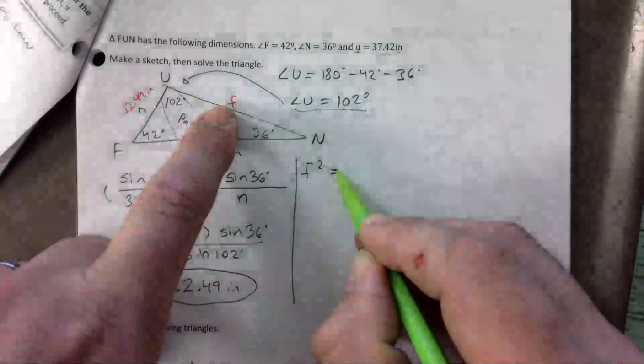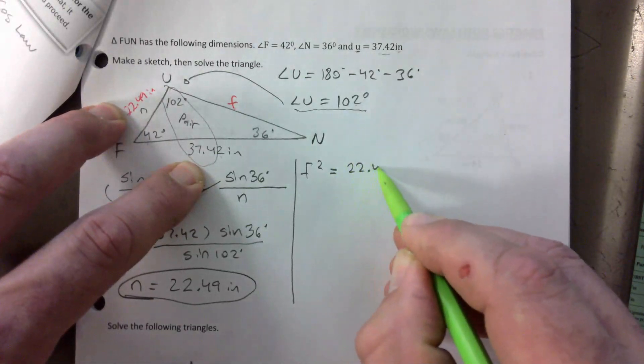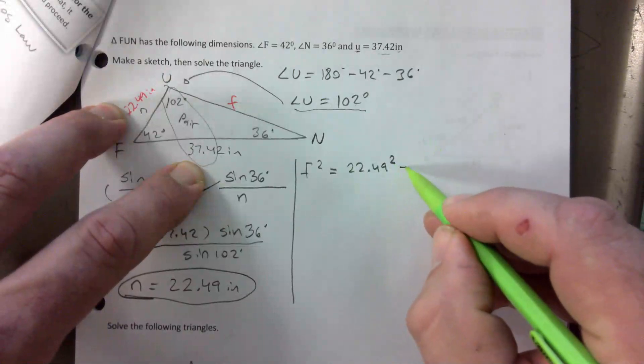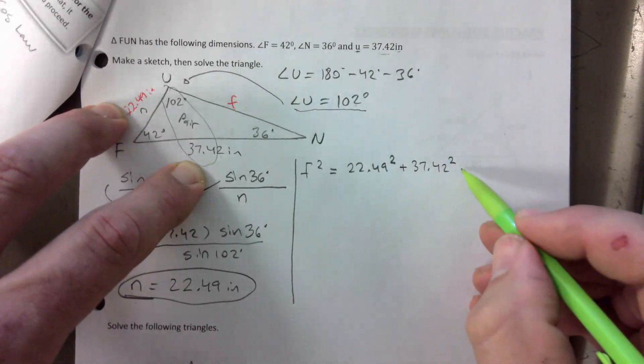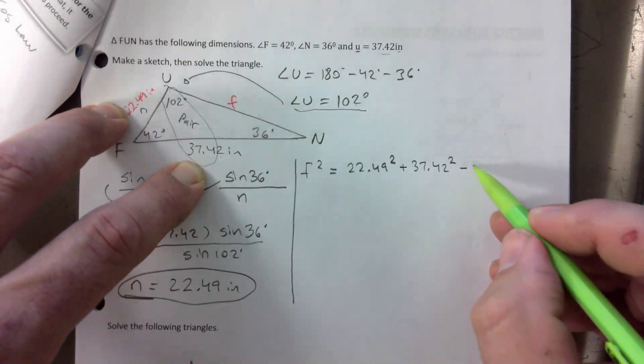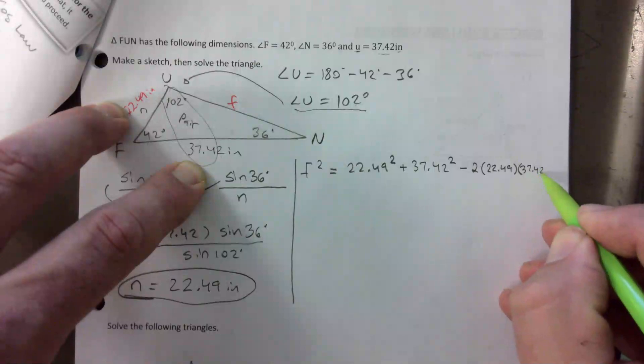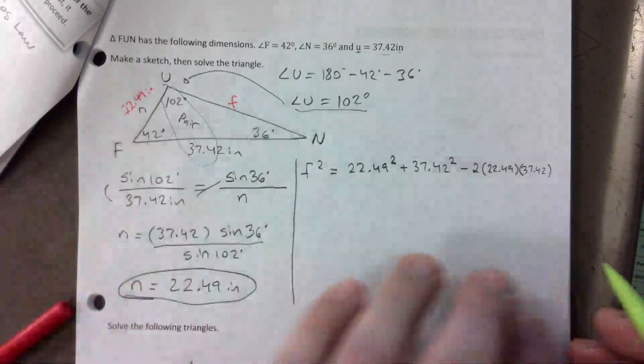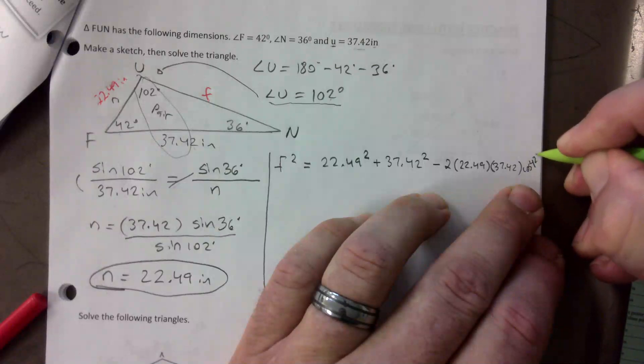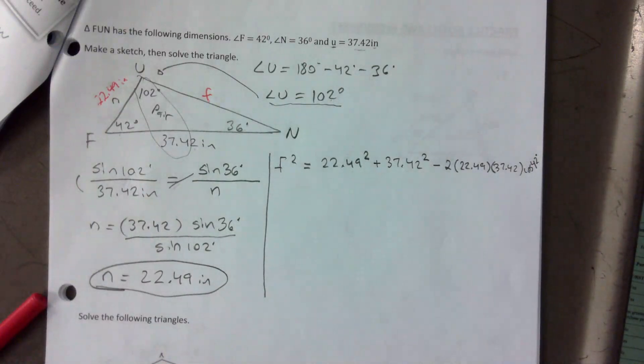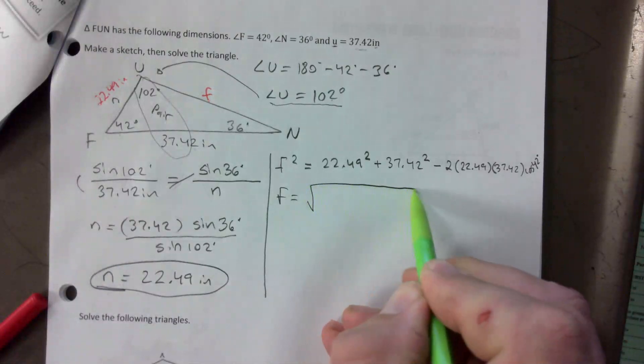If you want to know this side, you're gonna use these two here. So it'd be 22.49 squared plus 37.42 squared. Using cosine law here, but it's the SAS scenario, minus 2 times 22.49 times 37.42, cosine of 42. Let me see here, I'm gonna work my magic there. Some of you use sine law, that's fine, it's not a problem at all. So F will be square root of this whole thing.